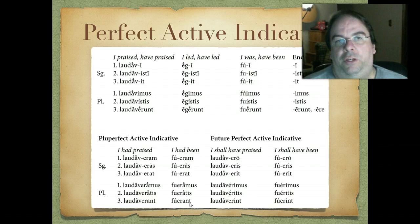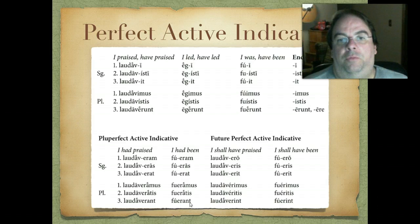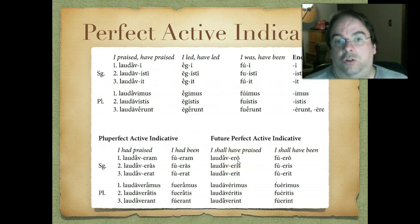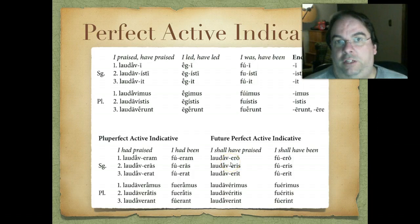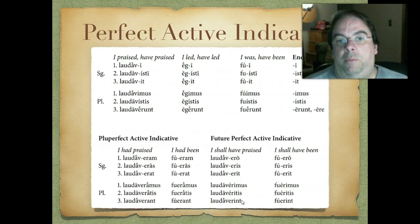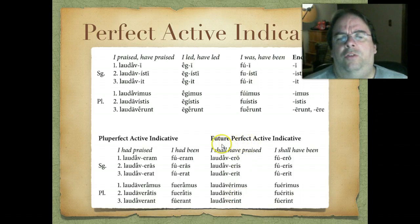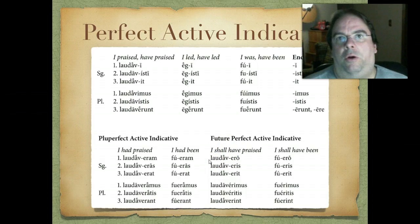For the perfect, we use some new endings; for the pluperfect, we use the imperfect of the verb 'to be.' Then for this third tense in the perfect system — future perfect — we take the future forms of the verb 'to be' and stick those straight onto the stem, with one exception. The endings for the future perfect active indicative are: -erō, -eris, -erit, -erimus, -eritis, and instead of -erunt we have -erint. So for laudāvī: laudāverō, laudāveris, laudāverit, laudāverimus, laudāveritis, laudāverint. Fairly regular and fairly easy to memorize.